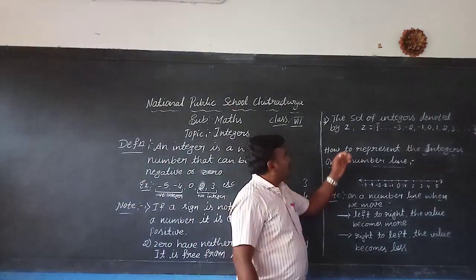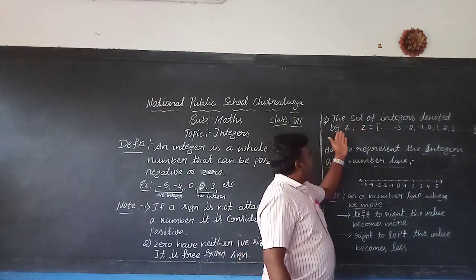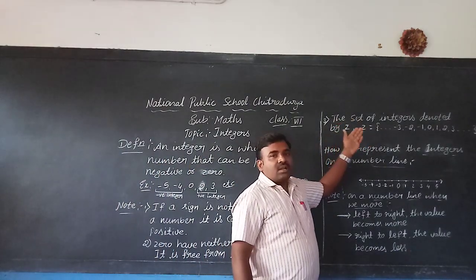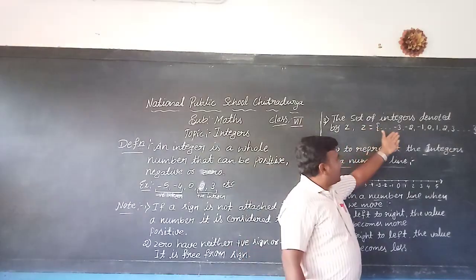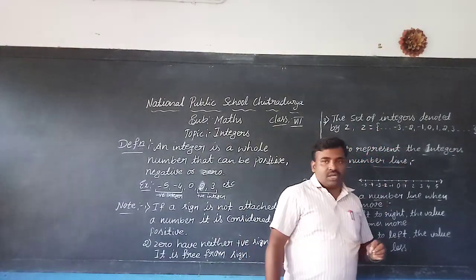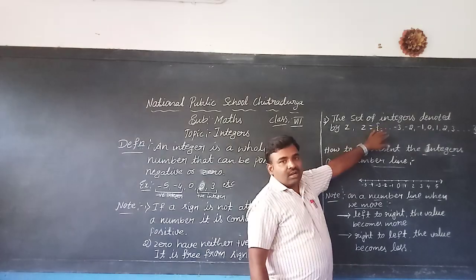And third one is the set of integers denoted by the symbol Z. So Z is equal to minus 3, minus 2, minus 1, 0, 1, 2, 3. So this is called the set of integers.